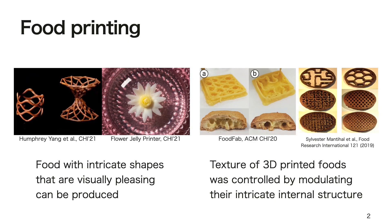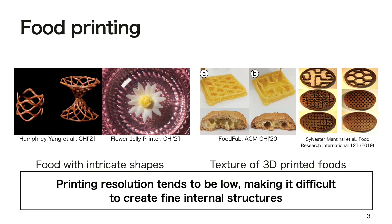Recent technologies have made it possible for 3D printing to produce food with intricate shapes that are visually pleasing. There are also studies where the texture of 3D printed foods was controlled by modulating their intricate internal structure. However, in food printing, the printing resolution tends to be low, making it difficult to create fine internal structures.